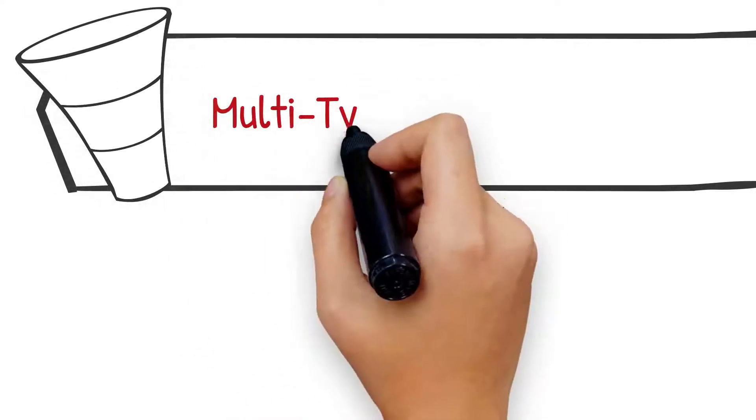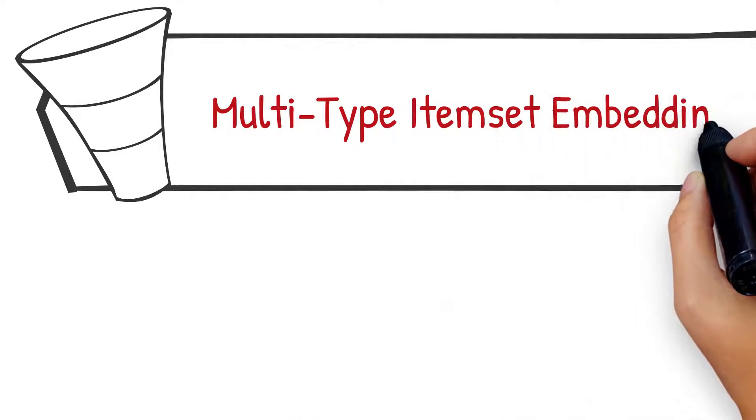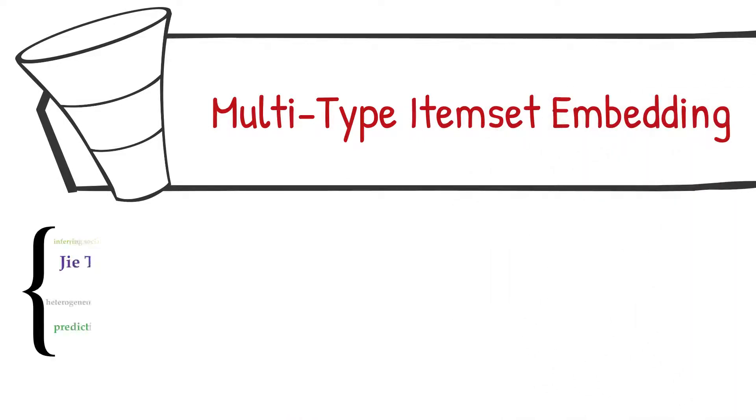LearnSuck is composed of two modules. The first module is a novel embedding based learning method. We call it Multi-Type Item Set Embedding.